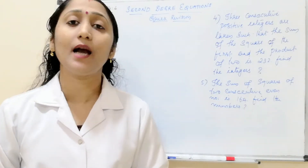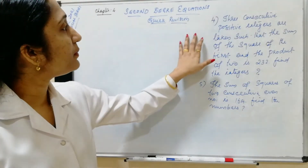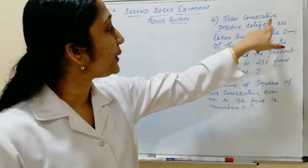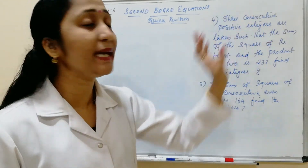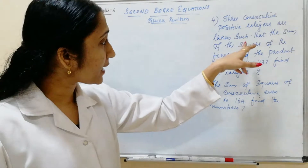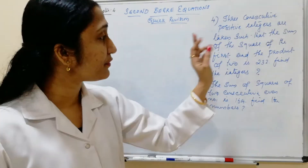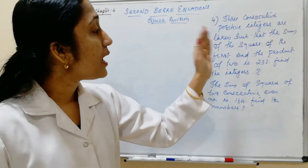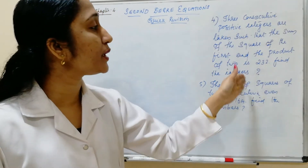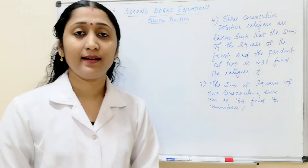Let us see how to do it. Here the problem is: 3 consecutive positive integers are taken such that the sum of the square of the first and the product of the other 2 is 232. Find the integers.